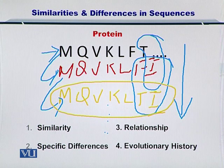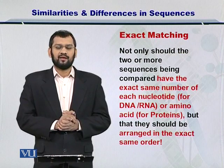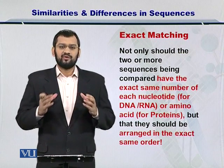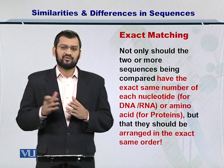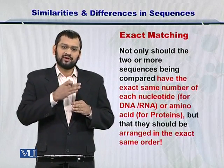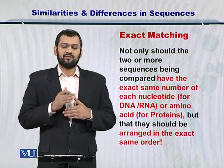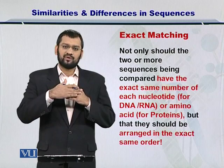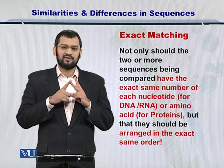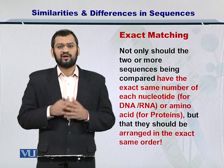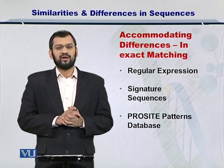In this way you can also look at the evolutionary history. Now I would like to introduce exact matching. The idea is that two sequences are not only similar in terms of amino acids or nucleotides in the case of DNA and RNA, but that the order in which they appear in the sequence is exactly the same. As I mentioned in the previous example, for exact matching, sequences should have the exact same amino acids or nucleotides present in the same order. However, there can be cases when this is not going to happen, and in that case you will need to accommodate the differences.